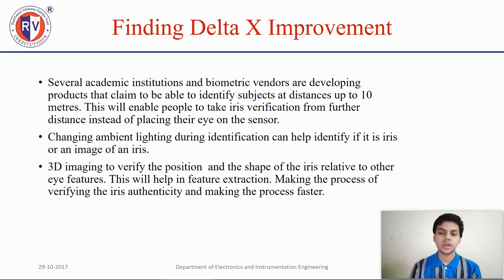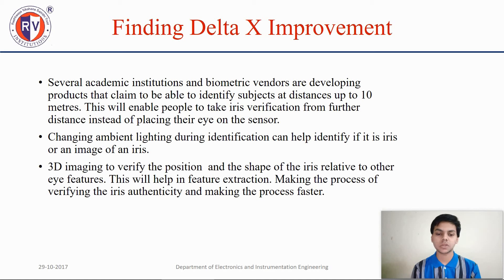The findings and improvements: several academic institutions and biometric vendors are developing products that claim to identify subjects at a distance of up to 10 meters. This will enable iris verification from further distances instead of requiring subjects to place their eye on the sensor. Changing ambient lighting during verification can identify whether it is a real iris or an image of an iris. 3D imaging can verify the position and shape of the iris relative to other eye features, making the verification process faster and more accurate.